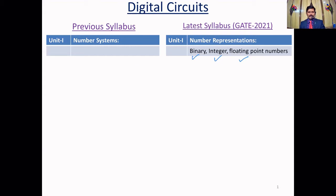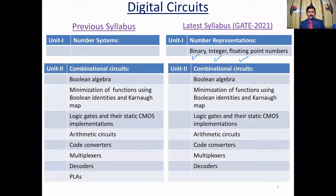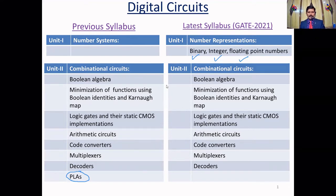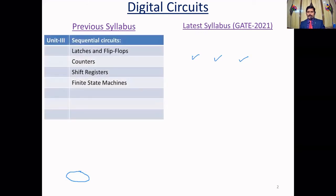Let us go to the second unit. The second unit is related to combinational circuits: Boolean algebra, minimization of functions using Boolean identities and Karnaugh maps, logic gates, static CMOS implementations, combinational circuits, code converters, multiplexers, and decoders. The syllabus is largely the same here, but observe that PLDs are not included — they have removed the topic PLDs from this syllabus.